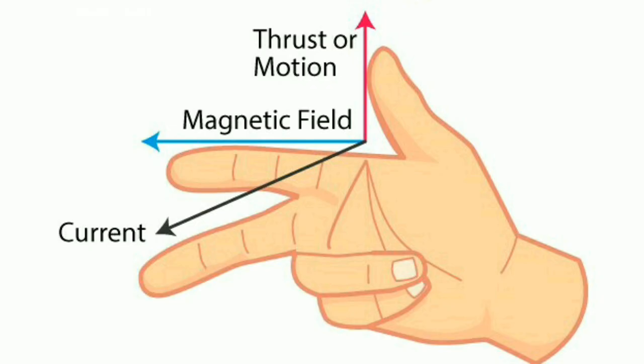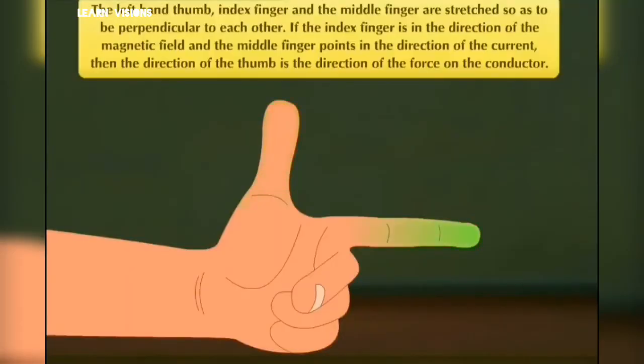Now we will learn how we can find the direction of force exerting on the conductor with the help of Fleming's left hand rule. In this rule, the left hand thumb, index finger and middle finger are stretched so as to be perpendicular to one another.